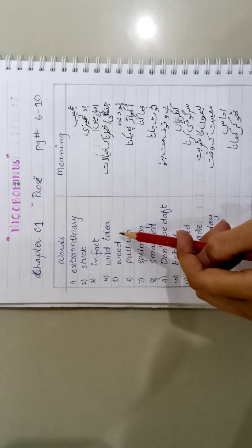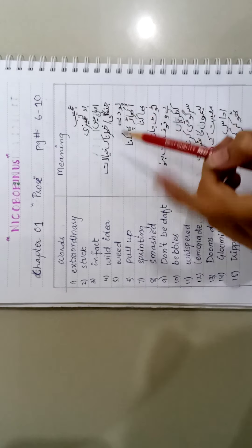Let's begin with words meaning. Extraordinary: ajeeb. Stuck: but. Tamizhi: in fact. Asal me: wild idea, jungli khatarnak khayalat. Weed: paudhe. Pull up: ukhaar phekna.